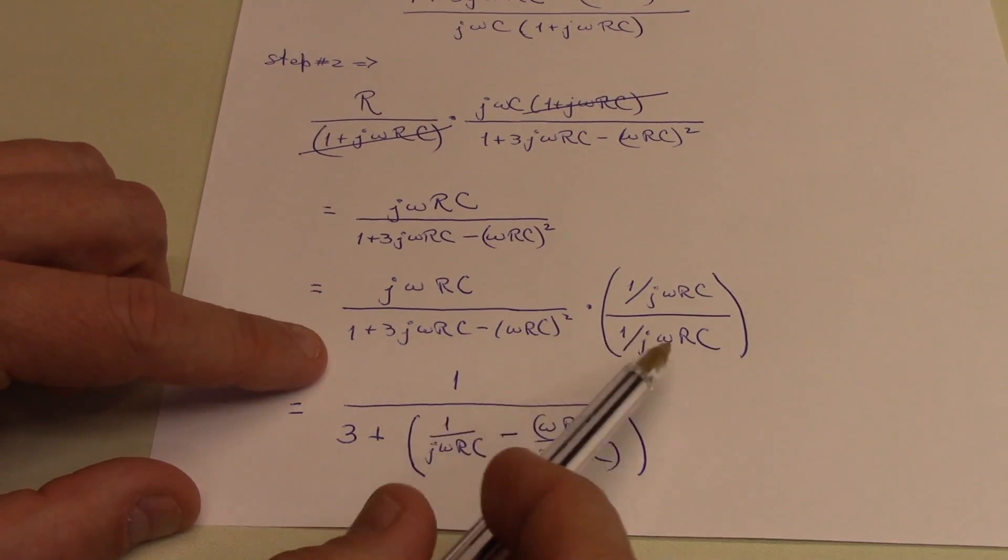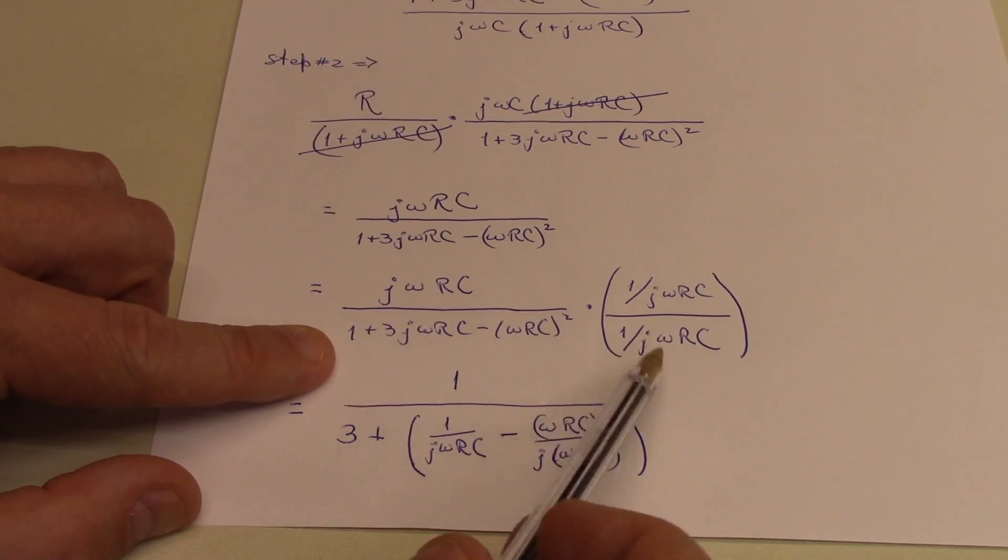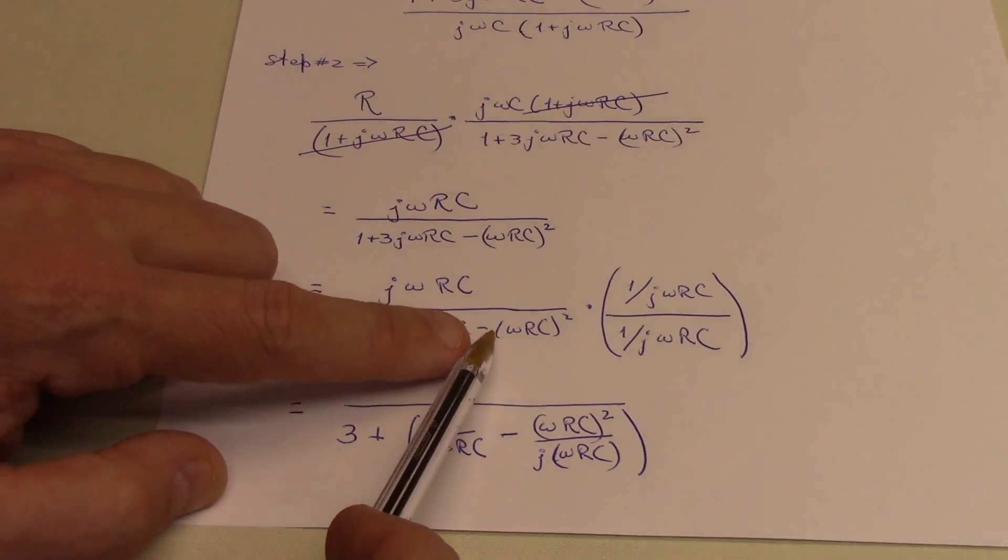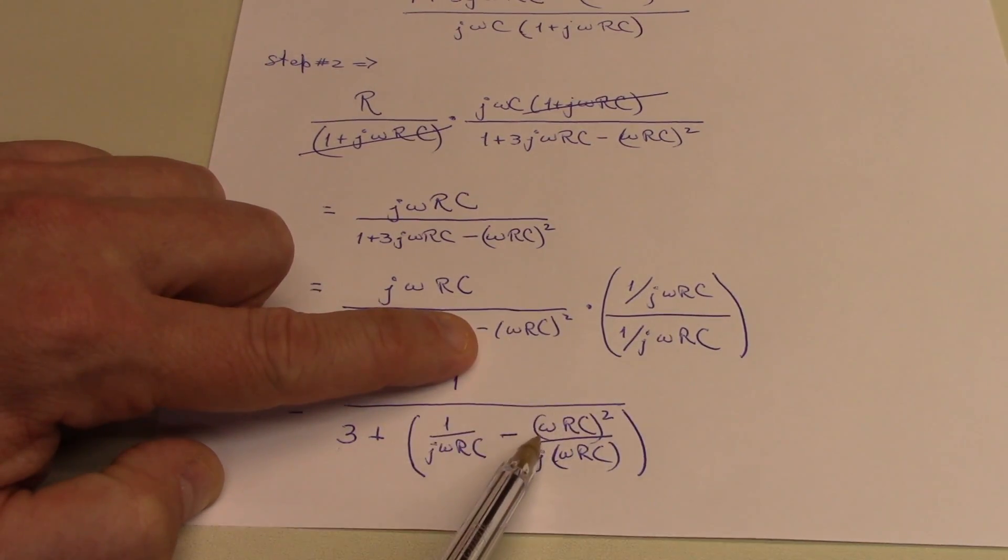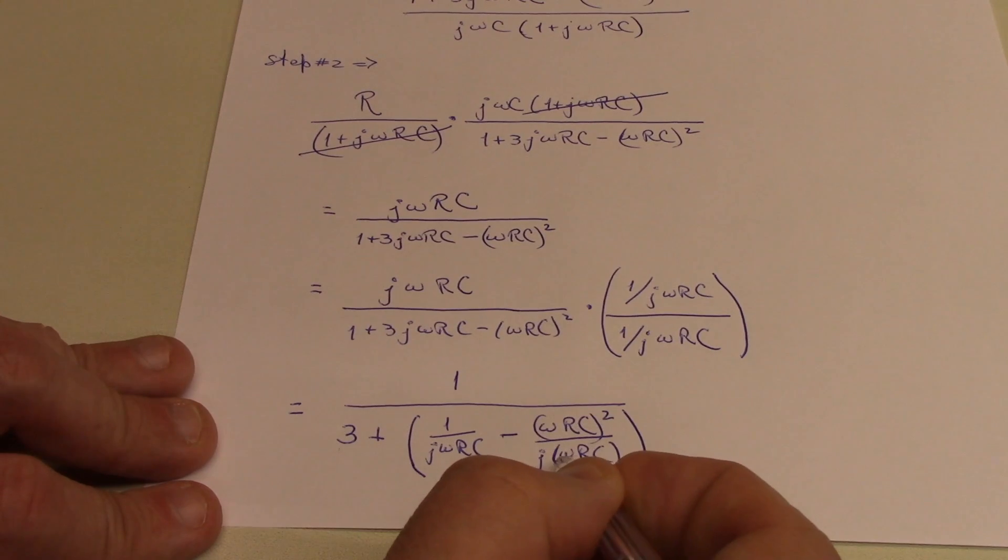The j omega rc factor goes out, so I have 3 plus this factor here, 1 over j omega rc. And then I'm left with omega rc quantity squared divided by j times omega rc.